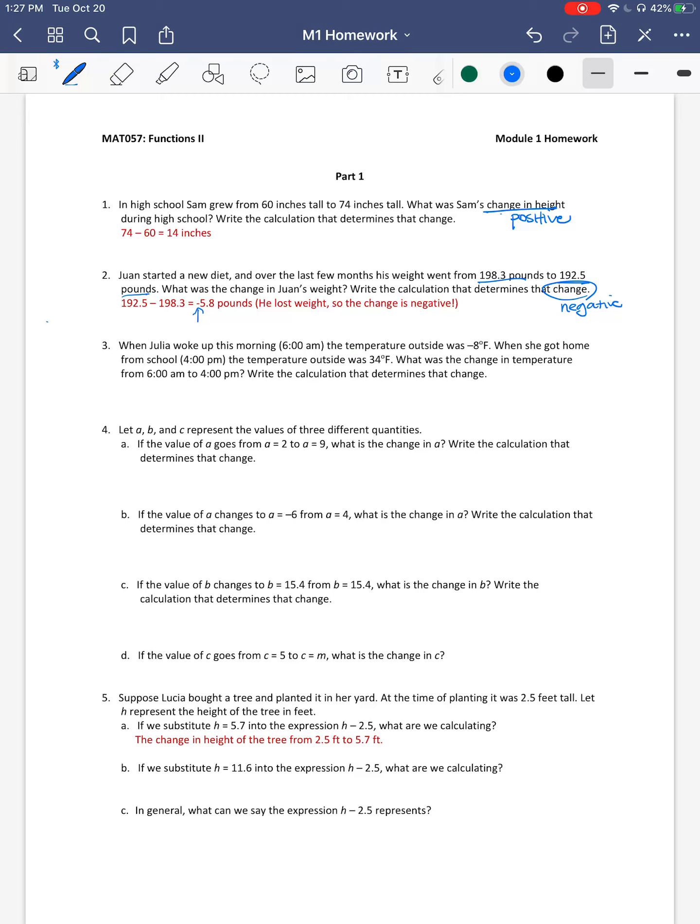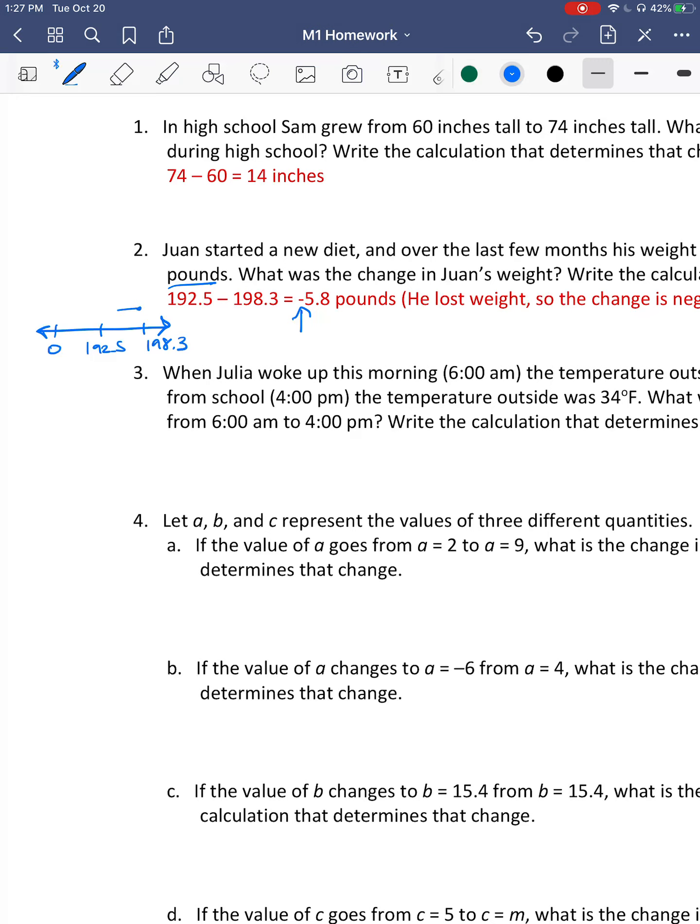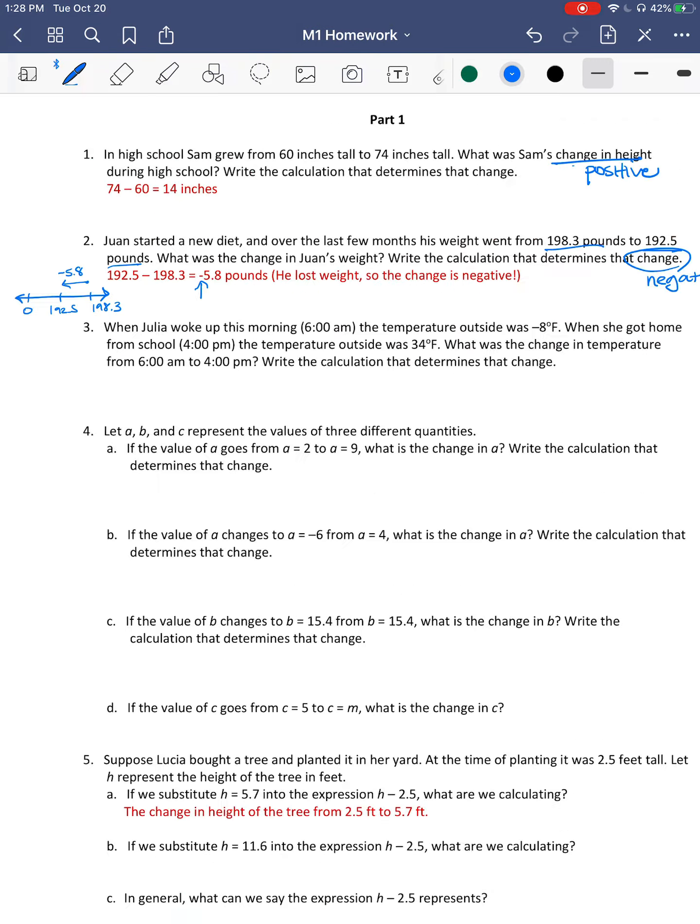Another way you can think about things is using a number line. So somewhere over here, 0, 192.5. I'll make this bigger. 198.3. And so essentially he went from here and he went this way, which is a decrease of 5.8 pounds. That's going to help us a little on number 3.